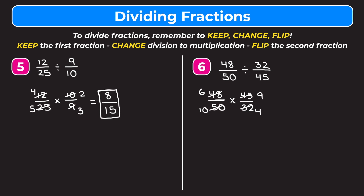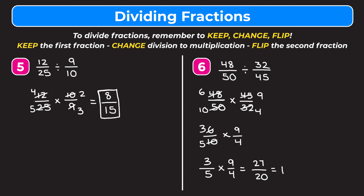Now I can simplify six over ten by dividing top and bottom by two — six becomes three, ten becomes five. So it's three fifths times nine fourths. I can't simplify further, so multiplying straight across: three times nine is twenty-seven, five times four is twenty. We get twenty-seven twentieths, or as a mixed number: twenty goes into twenty-seven once with seven left over, giving one and seven twentieths. Hopefully this video helped you learn how to divide fractions — just remember keep, change, flip.